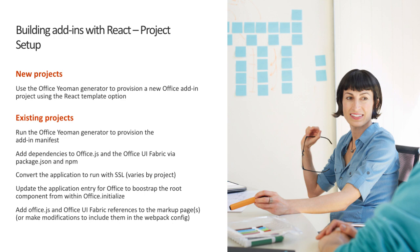There are two approaches to building add-ins with React: you can build a new project or convert an existing one. For a new project, the Office Yeoman Generator has a great React template you can leverage to immediately get going. For existing projects that need to be converted, you can still use the Office Yeoman Generator to generate the add-in XML manifest. You'll also need to convert the web application to use SSL, as add-ins won't load from a normal HTTP page — they must be HTTPS. Depending on the existing solution, this might be as simple as flipping an SSL flag, but in worst case it involves creating a self-signed certificate.